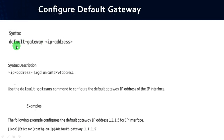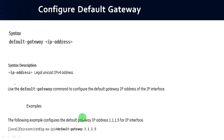Similarly, if you want to configure the default gateway, you have to use the syntax: default-gateway <ip address>. Use the default-gateway command to configure the default gateway IP address of the IP interface. For example, if you want to set the default gateway as 1.1.1.5, write: default-gateway 1.1.1.5.